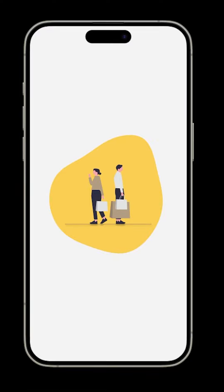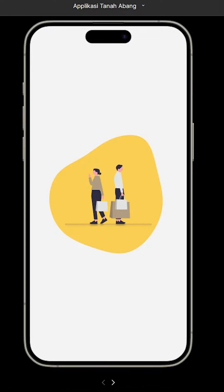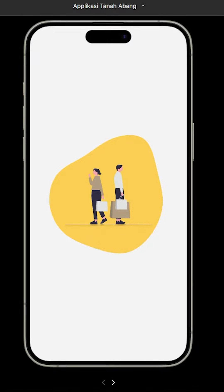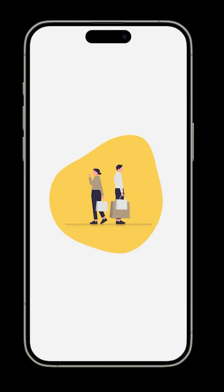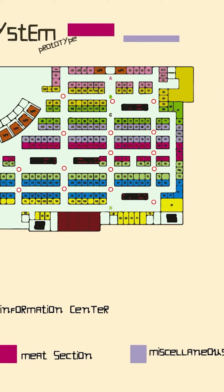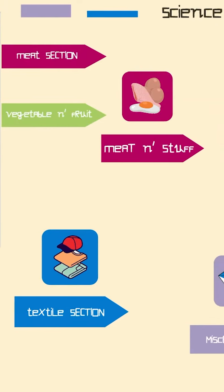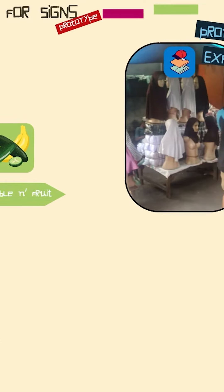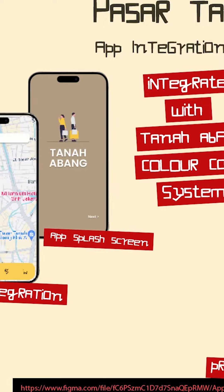I'm about to present our new app called the Tanah Abang app, which will help optimize the implementation of the solution we produced for the Tanah Abang Cluttered problem. We made a color-coded direction sign system so sellers are arranged by the product they sell and by colors. There will also be signs placed in front of stores and on the roads in Tanah Abang. This app integrates with the real-life placement of that solution.